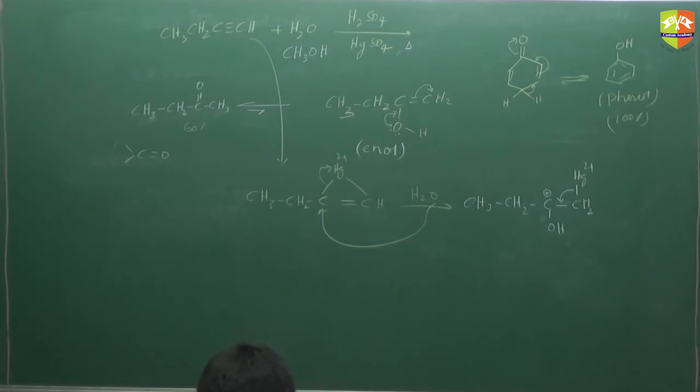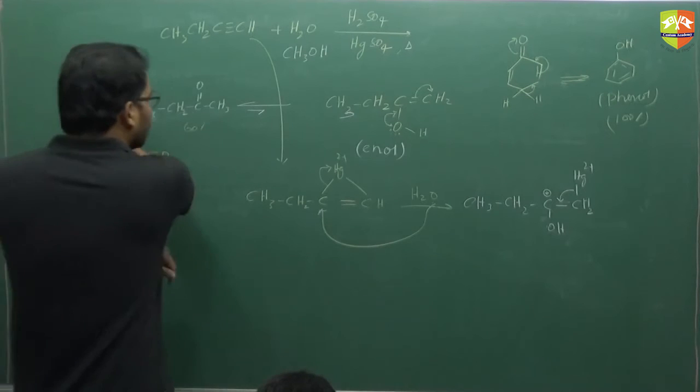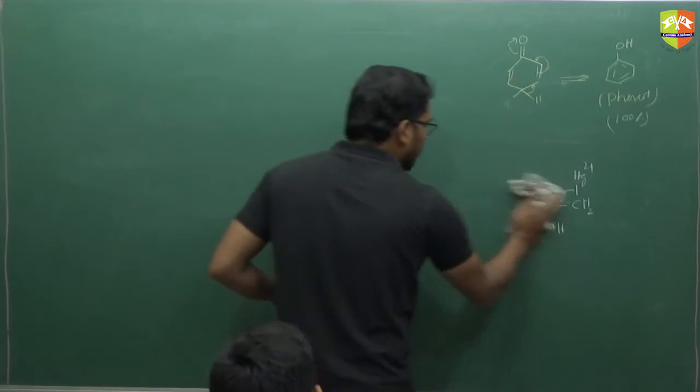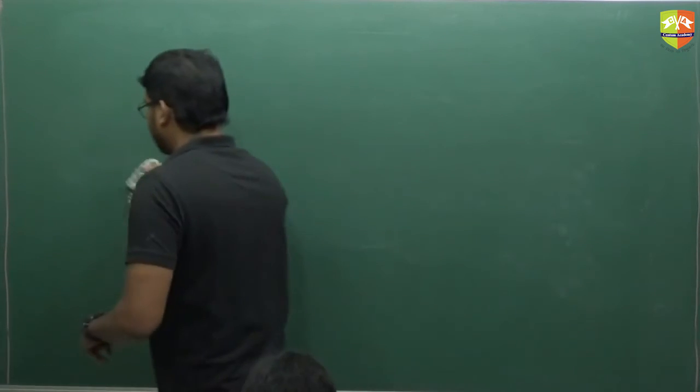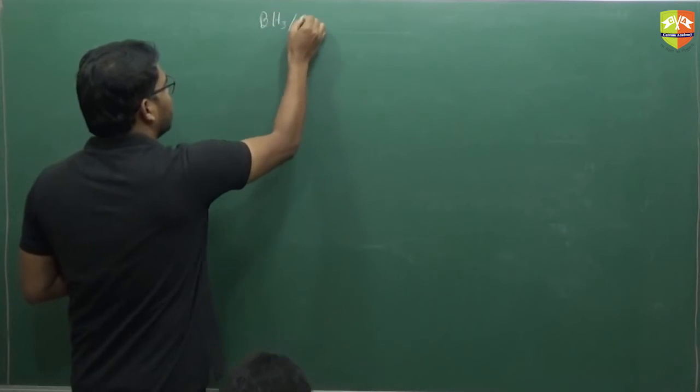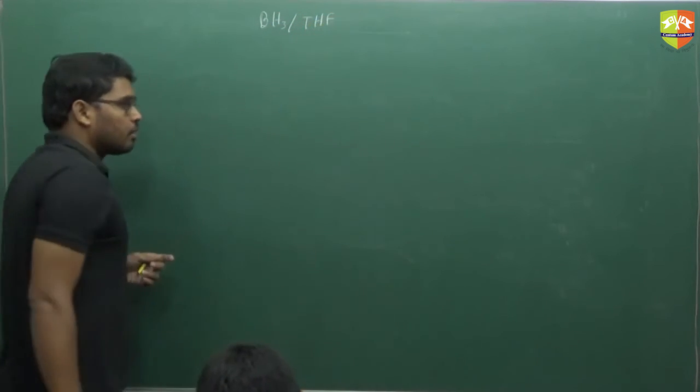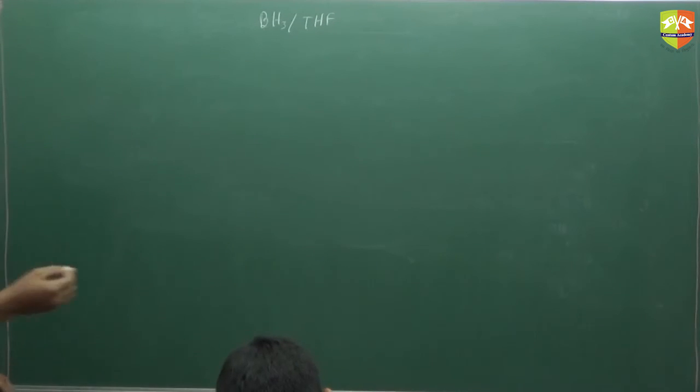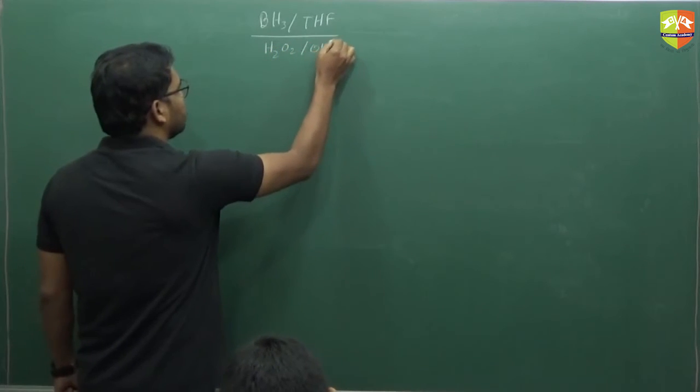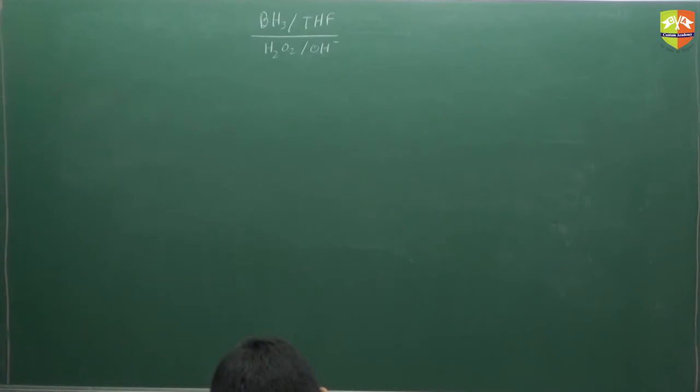Next reaction. Hydration of alkyne by addition of borane. Hydroboration oxidation reaction. Same reaction. Hydration of alkynes by the addition of borane. What is the reagent we have here? BH3 in THF and B2H6. Because BH3 can exist in dimer form also. So BH3 with THF, in the second stage what we take? H2O2 with OH-.